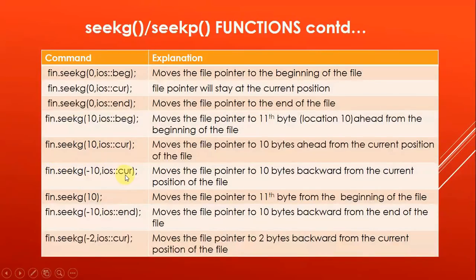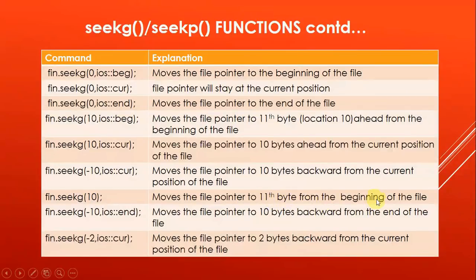fin.seekg(-10, ios::cur) moves the file pointer 10 bytes backward from the current position, because n is negative. If no reference position is given, for example fin.seekg(10), by default the reference position is taken as the beginning of the file, so it moves to the 11th byte from the beginning. fin.seekg(-10, ios::end) moves the file pointer 10 bytes backward from the end. fin.seekg(-2, ios::cur) moves the file pointer 2 bytes backward from the current position.